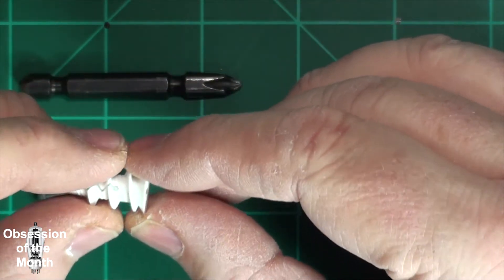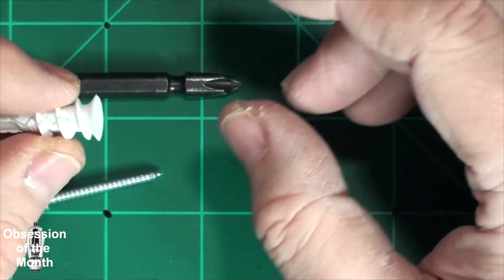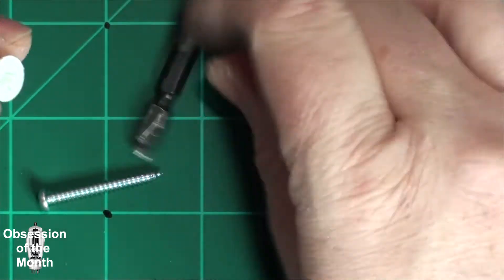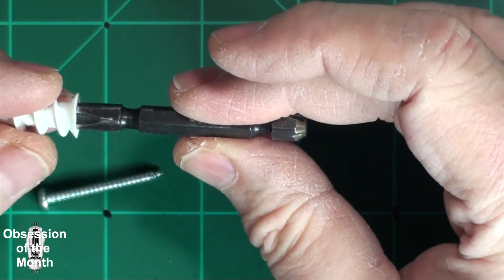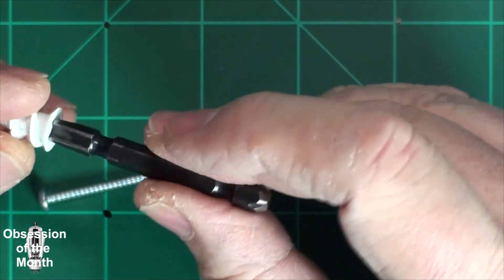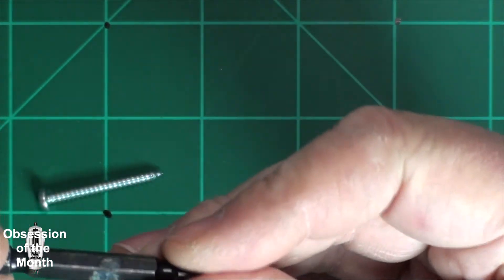The way I do it is I take a screw gun or an impact gun, doesn't really matter, and then you take a screw bit. It helps if it's a bigger one like this, a number two I think or a number three.